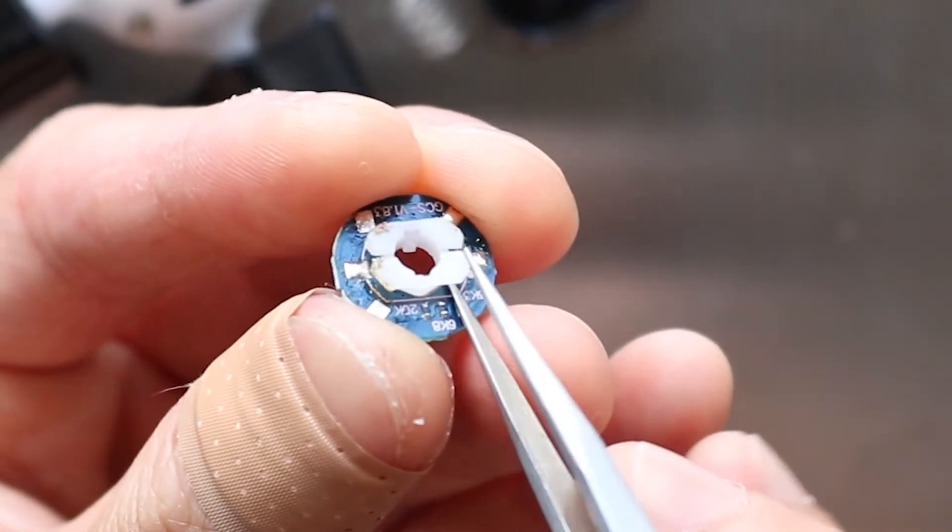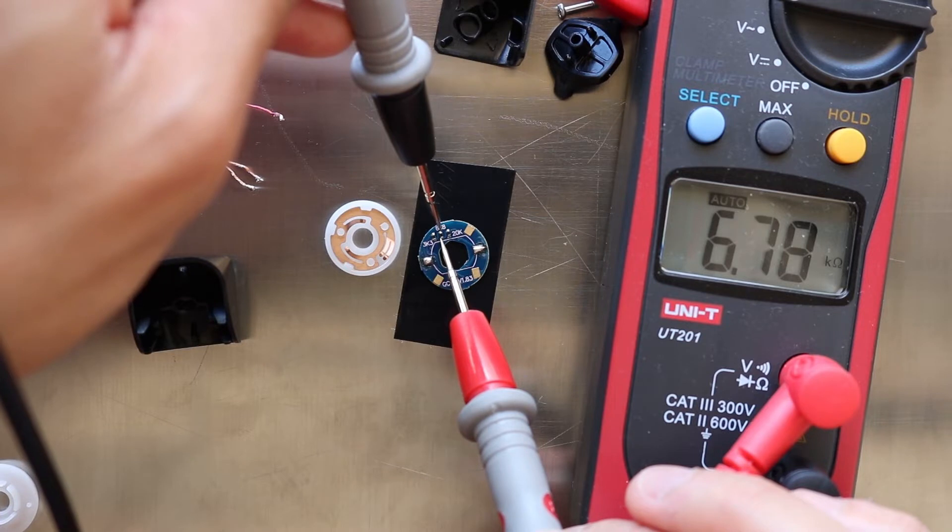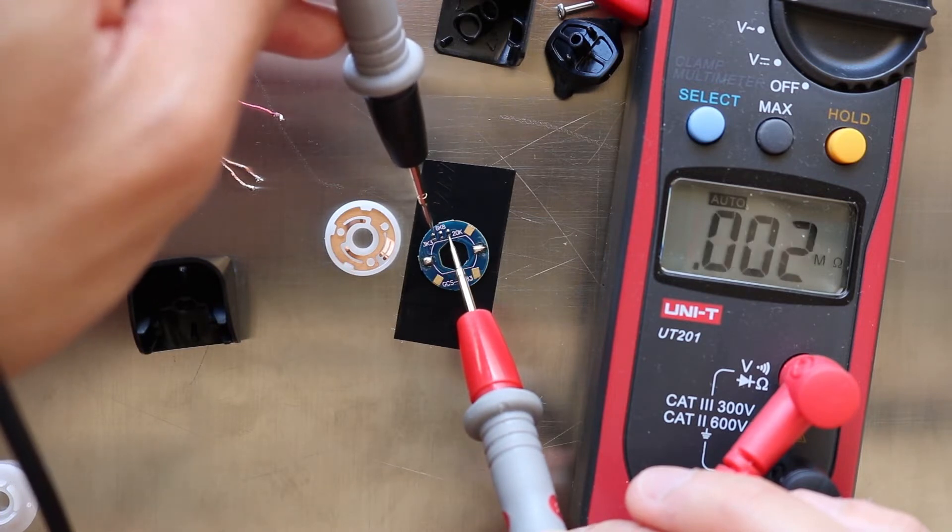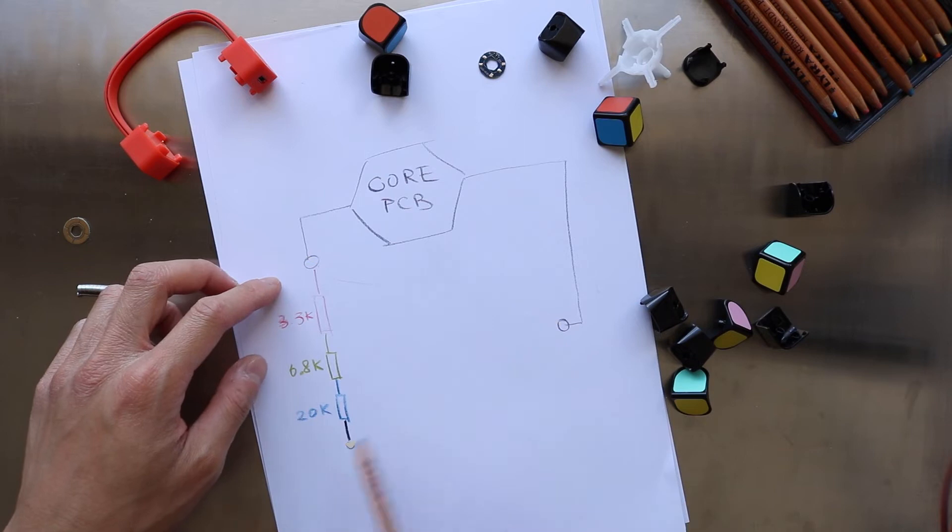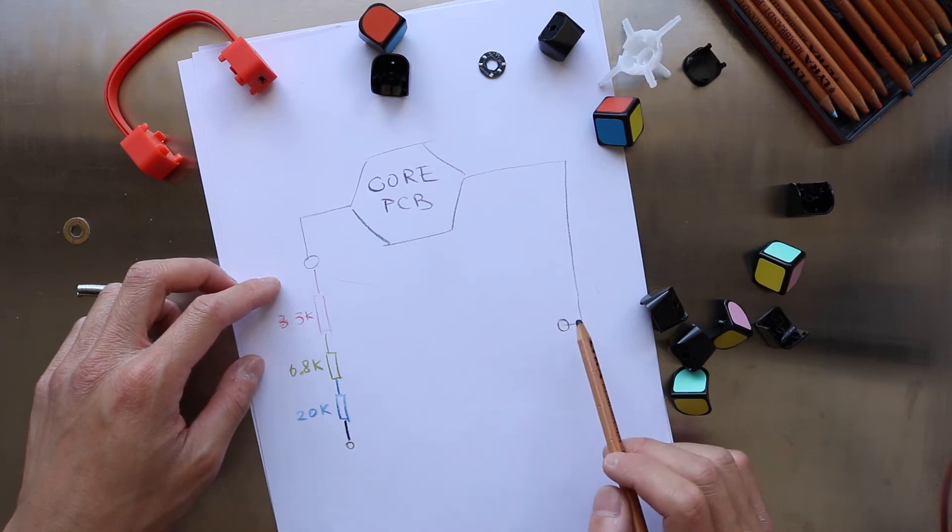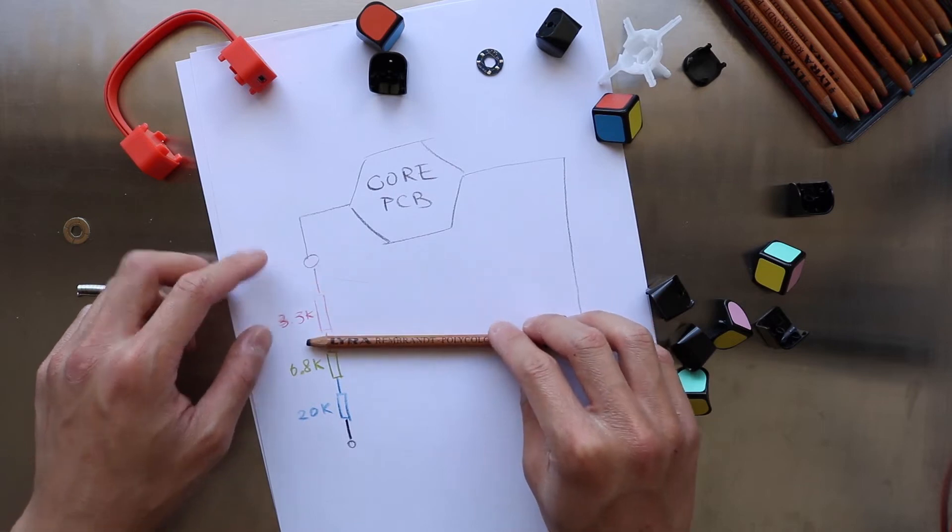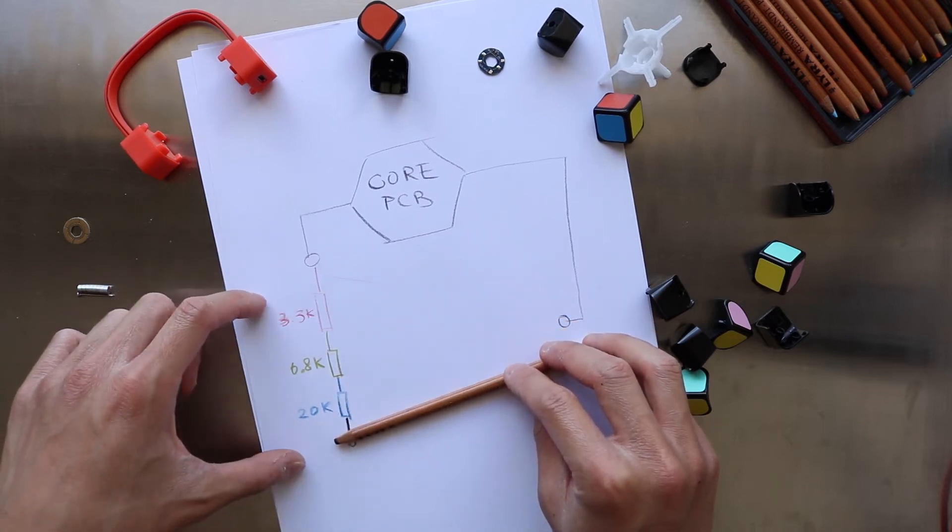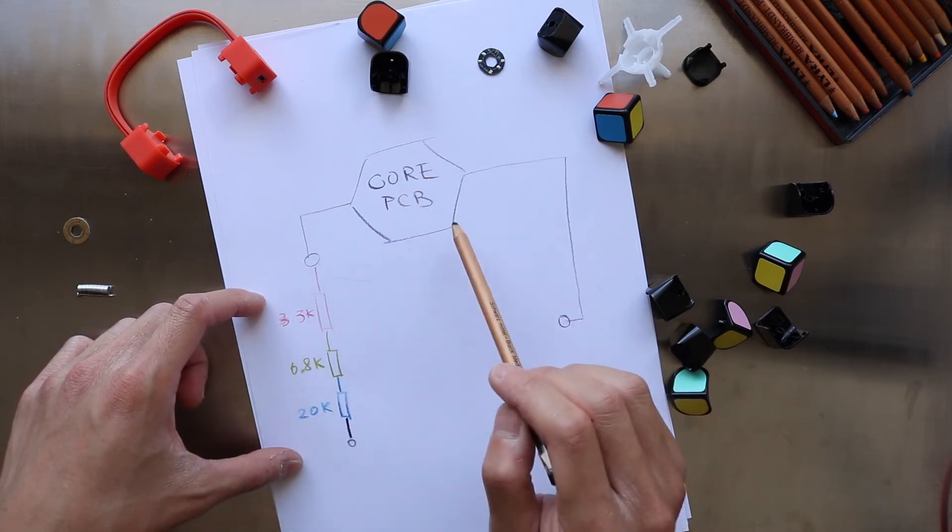There are three surface mount resistors on the board. The resistance values are 3.3, 6.8 and 20 kilo ohms and I also found out with my multimeter that they are connected in series. Depending on the position, the copper brush connects zero or up to three resistors between the two terminals. The resistance values that represent the four positions are therefore a few ohms, 3.3k, 10k and 30k ohms. And the electronics inside measure the resistance to determine the position.